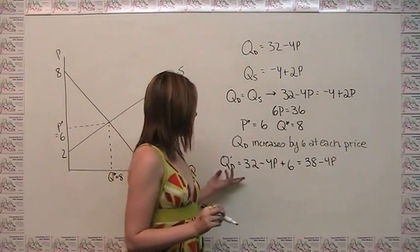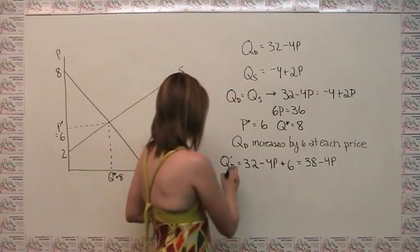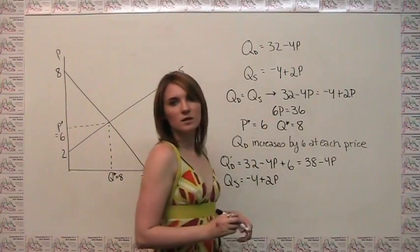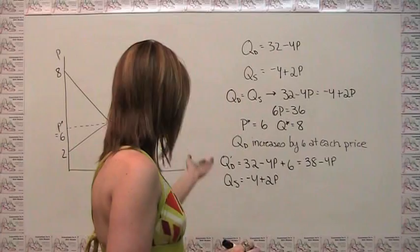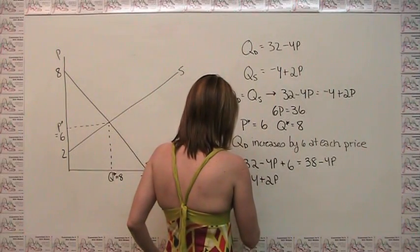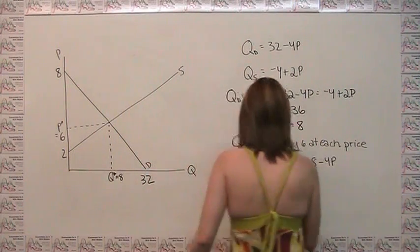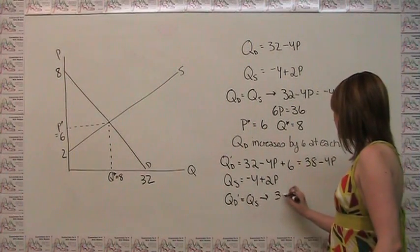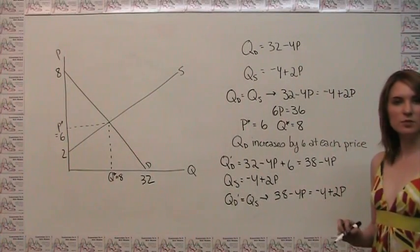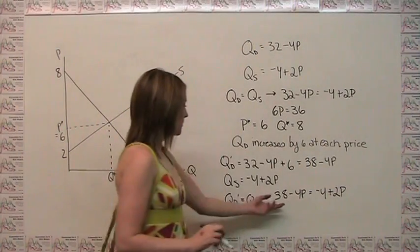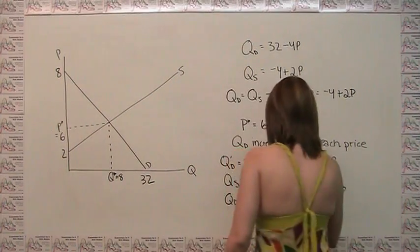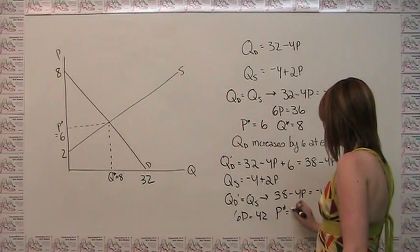We haven't done anything to shift supply, so quantity supplied is still negative 4 plus 2p. To find our new equilibrium, we set quantity demanded equal to quantity supplied, so 38 minus 4p must equal negative 4 plus 2p. Doing the algebra, this gives us 6p equals 42, or p* equals 7.